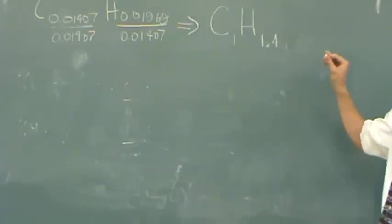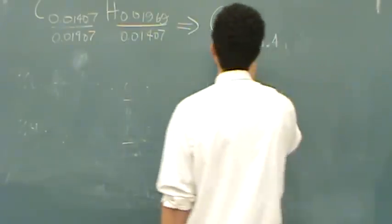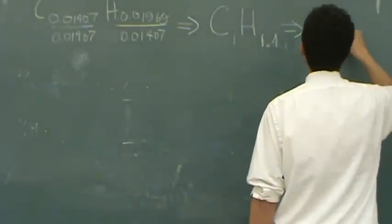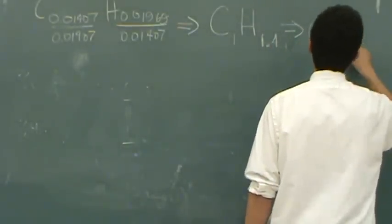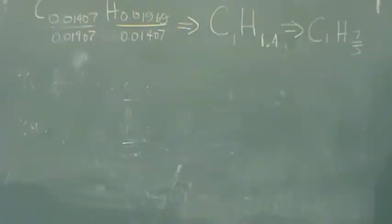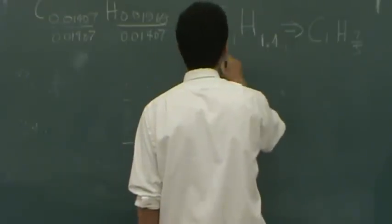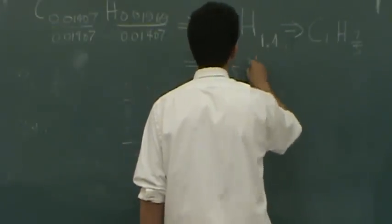Okay, so if we got to the point of C1H1.4, let me just rewrite this. That's the same as C1H7/5, or basically 1 and 2/5. So you multiply by 5 to get rid of the 7/5, you have C5H7.